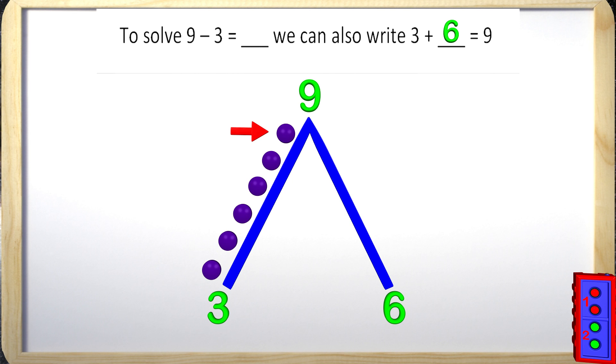Now for the first part of the problem, it asks, what is 9 subtract 3? We know the answer is 6 because we know 9 is made up of 6 and 3. Amazing!